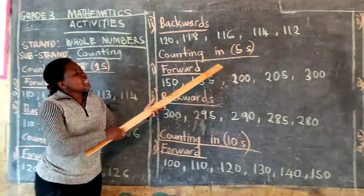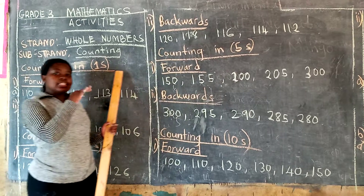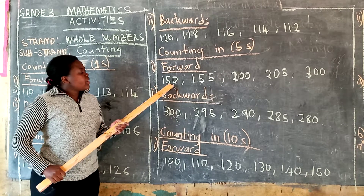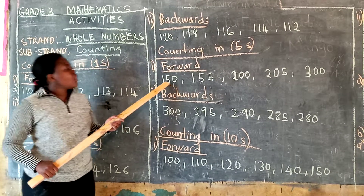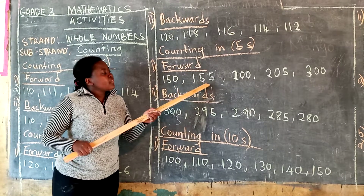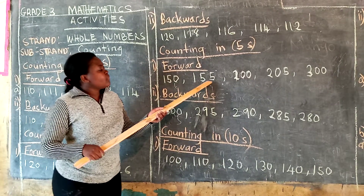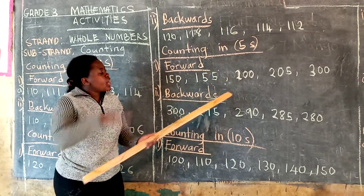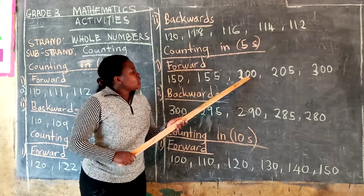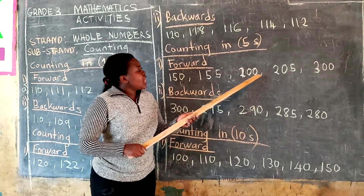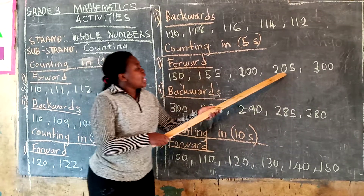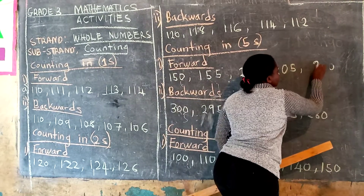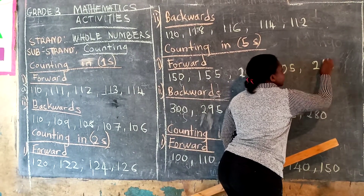Now we are going to counting in fives, forward. You are adding 5. Starting at 150, you add 150 plus 5, you get 155. Add the same: 155 plus 5, you get 160. Then 160 plus 5, you are going forward, you get 165. Then 165 plus 5, you get 170. Then add again, you get 205. Then 205 plus 5, you get 210.